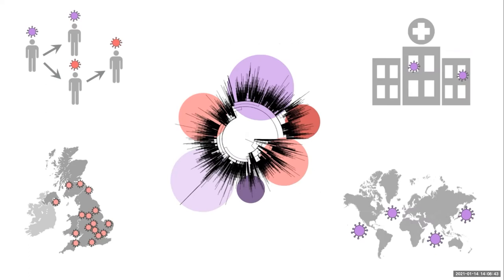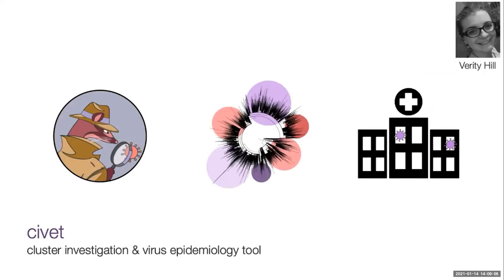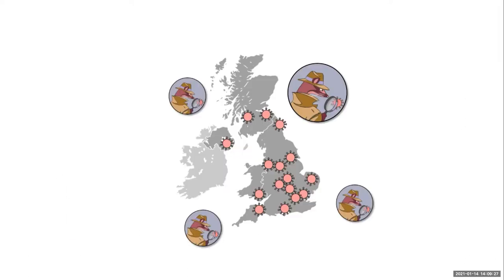All that information on the global tree is available, and depending on your question you can pull out the relevant kinds of information. To make this as straightforward as possible for researchers and clinicians, we've developed CIVET — Cluster Investigation and Virus Epidemiology Tool — which Verity and I have been working on for nearly a year. It's a flexible tool that can pull out relevant bits of the tree, tease apart relationships between a set of sequences, and generate a report with a range of figure options. Researchers and clinicians around the UK have been running CIVET for outbreak investigations, ruling out transmission, and informing contact tracing.